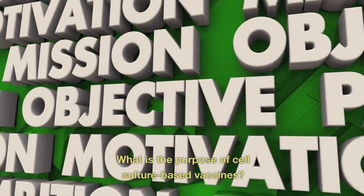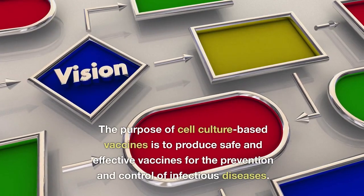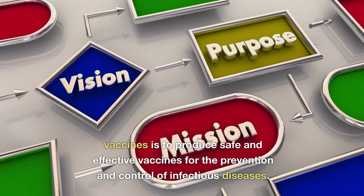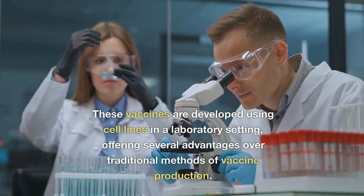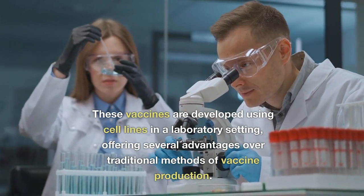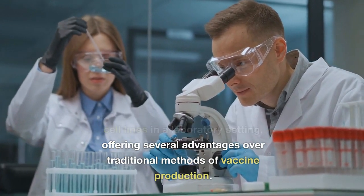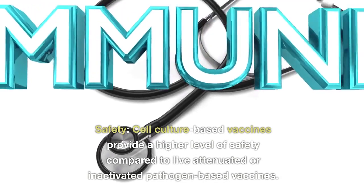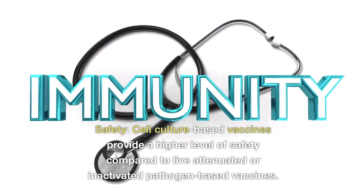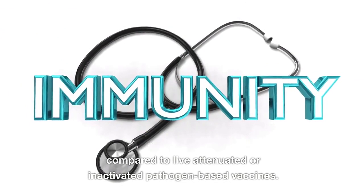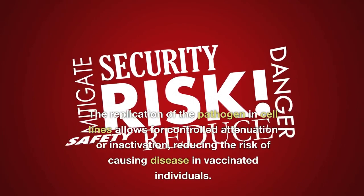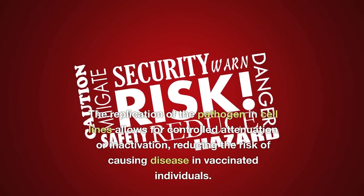What is the purpose of cell culture-based vaccines? The purpose is to produce safe and effective vaccines for the prevention and control of infectious diseases. These vaccines are developed using cell lines in a laboratory setting, offering several advantages over traditional methods. In terms of safety, cell culture-based vaccines provide a higher level of safety compared to live attenuated or inactivated pathogen-based vaccines, reducing the risk of causing disease in vaccinated individuals.